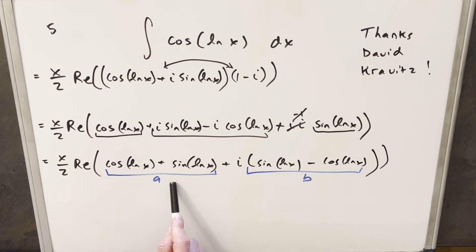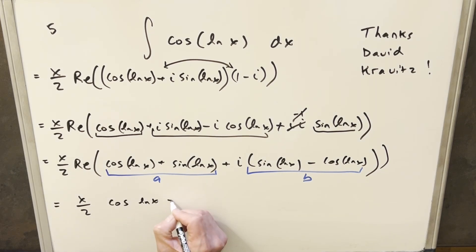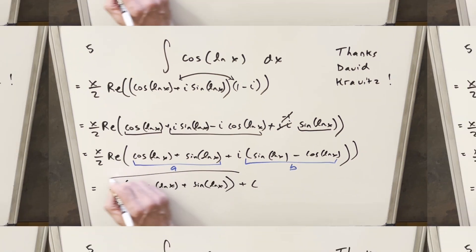And so taking the real part of that, we're just taking this a part, we get our final solution of just x over 2 times cosine ln x plus sine ln x. Put the right number in parentheses, add a plus c, and that's it.